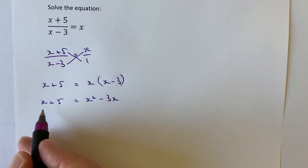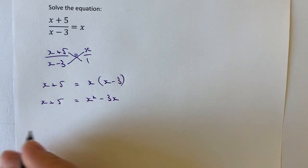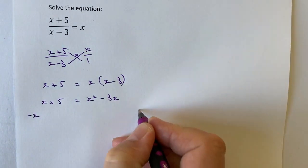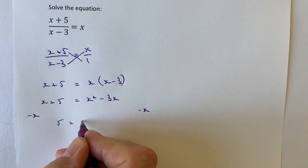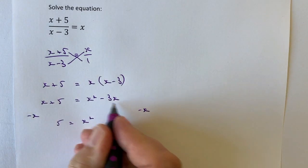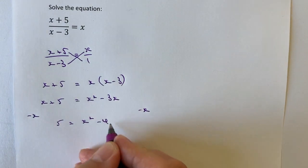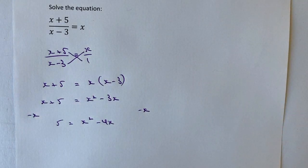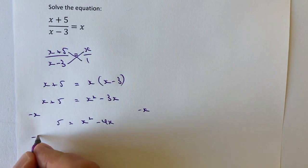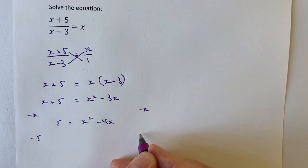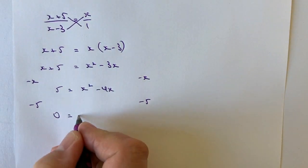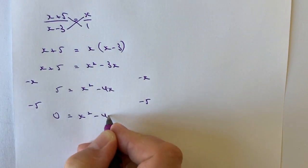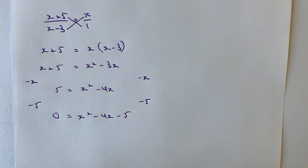So the first thing I'm going to do is take this x over towards the right by subtracting x from both sides. So if I do that, I still get 5, but I've now got x squared minus 3x minus x, which is minus 4x. Then I've got to get rid of this 5. The way I'm going to do that is subtract 5 from both sides. So that means I've got 0, which is what I want, equals x squared minus 4x minus 5.